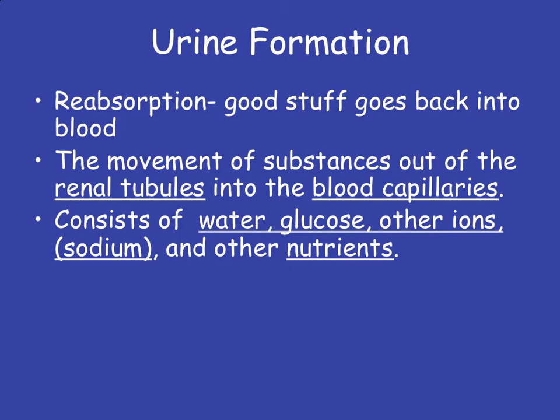Glucose is one that has to go back into the blood — we don't want to see any sugar or glucose in our urine. It's an indication of one of the different types of diabetes, and it's called glycosuria. That's one of the things they do when they test your urine — they look for that glucose, because it's a sign that you have a kidney problem and a form of diabetes.